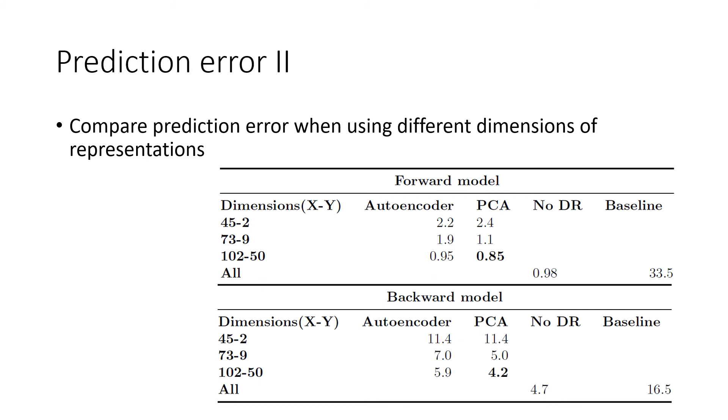In the previous comparisons, we used 45 dimensions for the representation of the atmospheric parameter space and two dimensions for the representation of the spectral data. These values correspond to 99% variance explained when using PCA. Next, we wanted to investigate the effect of using different dimensionalities of representations on the quality of prediction. In the case of the forward model, the best performer uses principal component analysis for dimensionality reduction and uses 102 dimensions on the atmospheric parameter data and 50 dimensions on the spectral data. It outperforms not only models with dimensionality reduction, but also the model with no dimensionality reduction at all. In the case of the backward model, the picture is the same. For both the forward and the backward model, the surrogate model significantly outperforms the baseline.